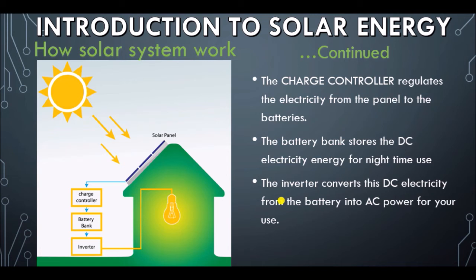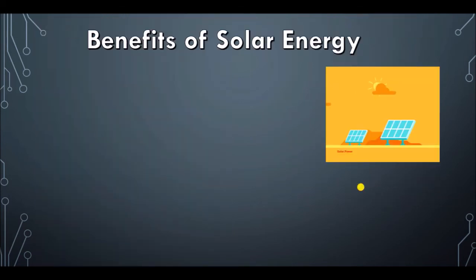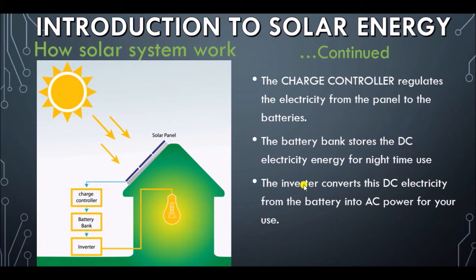Most of our appliances cannot be powered by DC. Our TV, our fan, our air conditioner are all manufactured to be powered by alternating current AC. So it is the work of the inverter to invert or convert the current to AC for home use. The inverter can also have an inbuilt charger, so that even when there is no sunlight and you have power from the grid — which we call NEPA — the inverter can tap electricity from the grid and charge your battery.